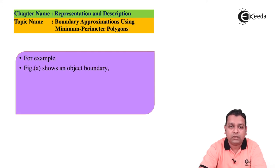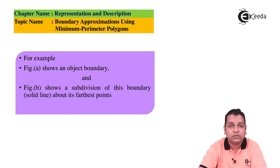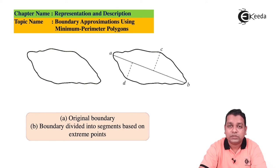For example, Figure (a) shows the object boundary, and Figure (b) shows the subdivision as a solid line about its farthest points. This is the original boundary, and on the right the boundary is divided into segments based on extreme points. A straight line joins the two extreme points, with markings of a, b, c, and d in the diagram.